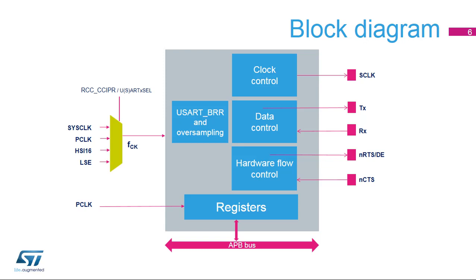This is the USART block diagram. The USART clock, FCK, can be selected from several sources: system clock, peripheral clock or APB clock, the high-speed internal 16 MHz RC oscillator, or the low-speed external 32.768 kHz crystal oscillator.